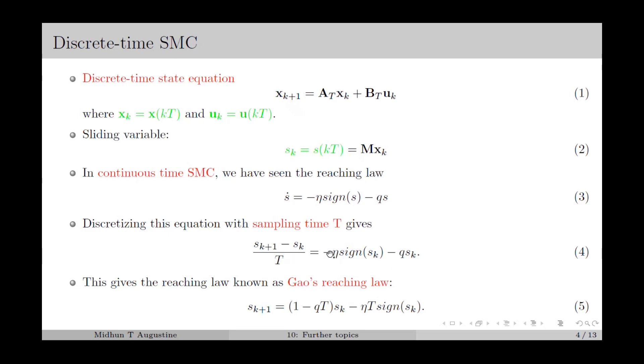Taking T to the right-hand side and rearranging, we obtain Gao's reaching law as in equation 5: s_{k+1} = (1 - qT)s_k - ηT·sgn(s_k). This is one of the reaching laws used to compute the control input in discrete-time SMC.